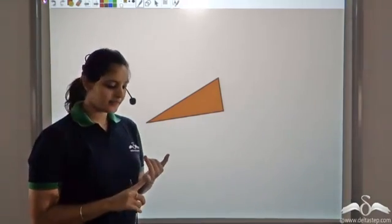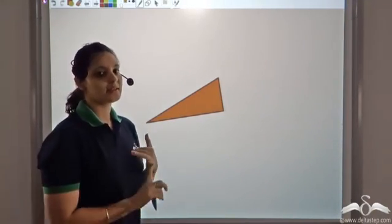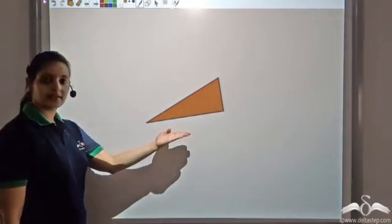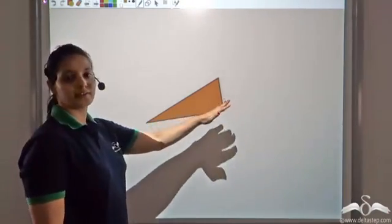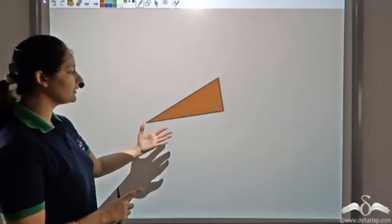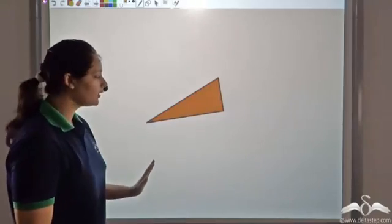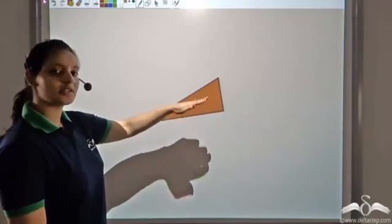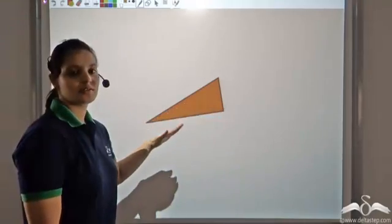We have seen that similarity means the shape is the same and the size need not be the same. So now let's look at this. We have a triangle and I want a similar triangle to this. I know that for a similar triangle only the size can change, the shape cannot. So I want a triangle which is either smaller than this or larger than this with the same shape.